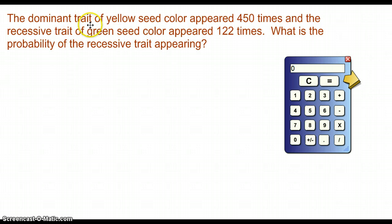The dominant trait of yellow seed color appears 450 times. The recessive green appears 122 times. I want to know the probability of the recessive trait appearing. I'm looking for recessive, and it appears 122 times. So 122 is my one event. For my total events, I need to add my dominant and recessive together.